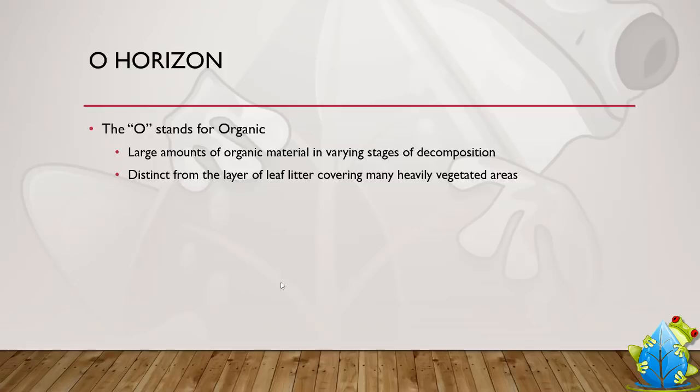So let's jump into the O horizon. The O is the topmost horizon, and these layers may or may not be present in all profiles, but this is a generalized profile. The O stands for organic and represents large amounts of organic matter that are basically decomposing. It is distinct from the leaves on top — the top of soil is really the place where air more or less stops. Leaves are kind of fluffy, so you kick those away, and then you have this matted area. That's the beginning of your O horizon.